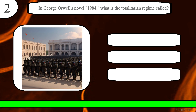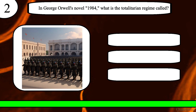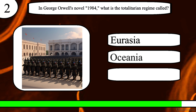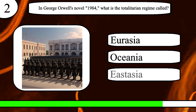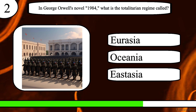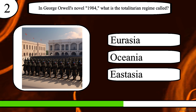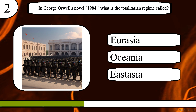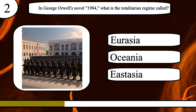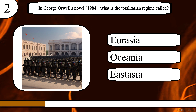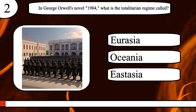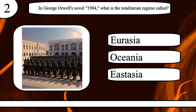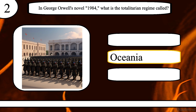Question 2. In George Orwell's novel 1984, what is the totalitarian regime called? Eurasia, Oceania, or Eastasia? The correct answer is Oceania.